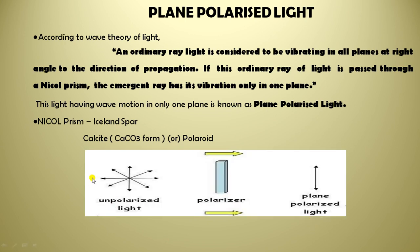This is unpolarized light, which is perpendicular to the direction of propagation — meaning it emits light in all directions. That is why it is known as unpolarized light. But when this unpolarized light passes through the polarizer, it is converted into only one plane; that is why it is known as plane polarized light.